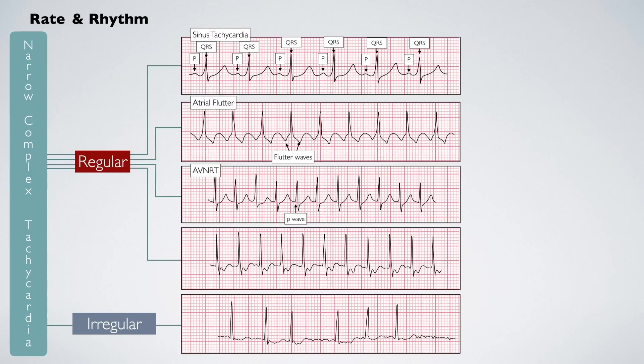If the rhythm is regular but you can see P-waves occurring after the QRS complex, these are known as retrograde P-waves. This indicates an atrioventricular re-entrant tachycardia. Finally, if the rhythm is irregularly irregular and there are no P-waves present, but instead you can see fibrillatory waves, this is atrial fibrillation.